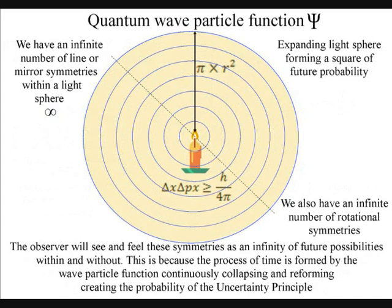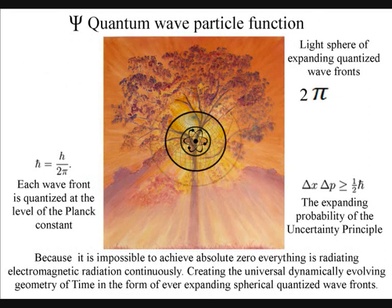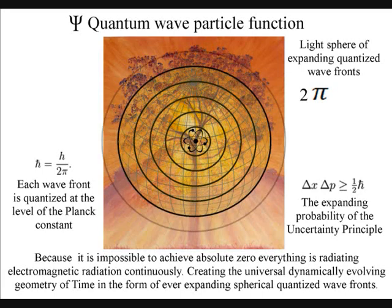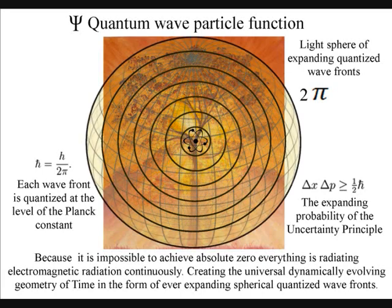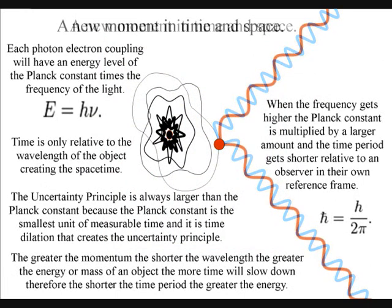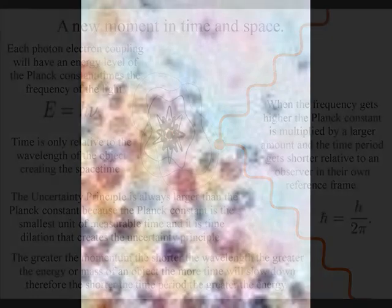Light is always radiating out from its radius a square of probability. This is the same square of probability you will have with any future event. If you tossed up a coin, you will mathematically create a square of probability. Because all objects, even people, radiate light or electromagnetic radiation continuously, we are also creating our own future probability, just like the coin.